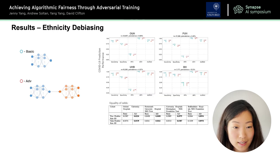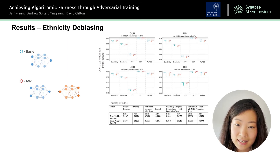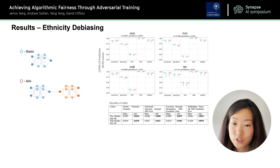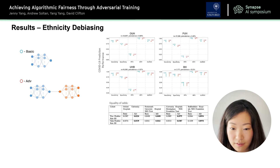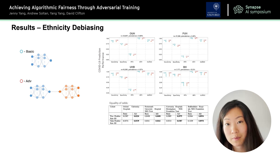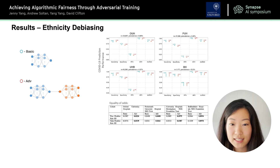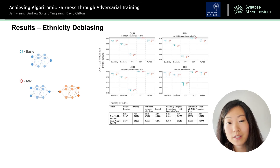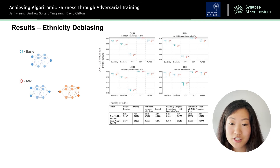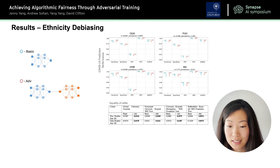Here are some results starting with the ethnicity debiasing task. On the right side are results for COVID-19 performance, which is the main task we're aiming to achieve, and also equalized odds, which determines the fairness of our models with respect to ethnicity. Results are shown after being tested on all four hospital groups independently. We find that when comparing both basic and adversarial results, they perform similarly and highly for COVID-19 prediction. But with respect to equalized odds, the adversarial model performs much more fairly, as shown by the bolded results representing the best results.